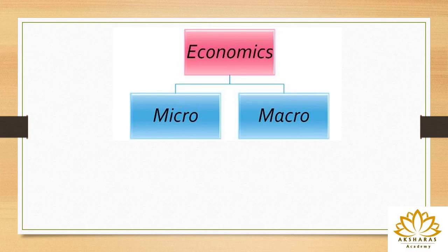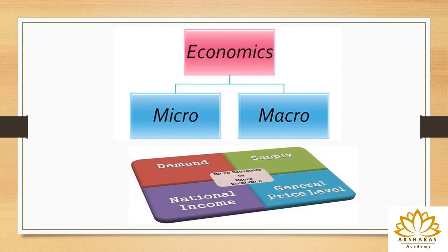Macroeconomics is a detailed study. For example, you study about all the fruits — that is macroeconomics and it takes into account the totality of everything. That totality is called the aggregate. For example, in microeconomics you study demand and supply, and in macroeconomics you study national income and general price level. These are some examples.